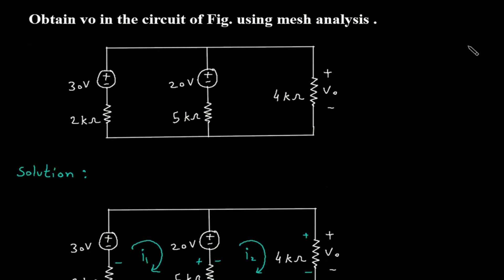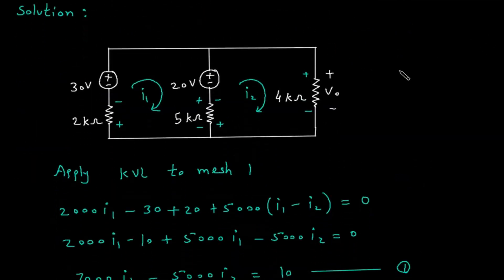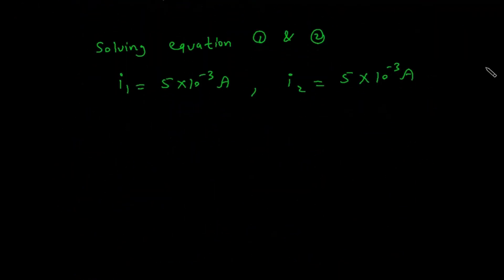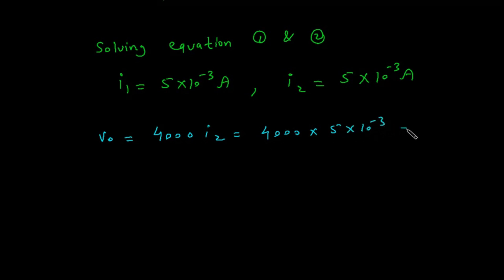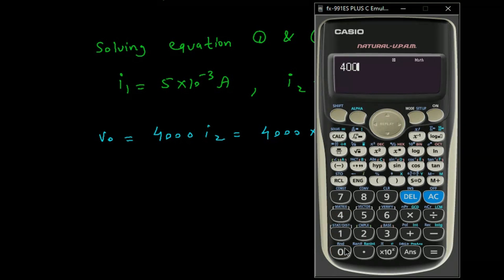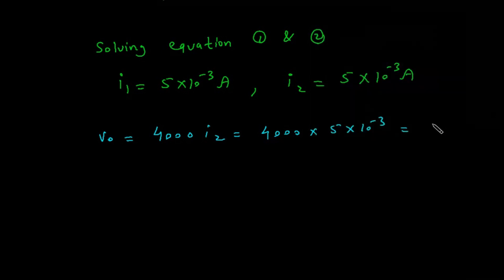What we have to find? We have to find VO. So VO is equal to 4000 × I2, which is 4000 × 5 × 10⁻³. This gives 4000 × 10⁻³ × 5, which equals 20. Therefore, VO is equal to 20 volts.